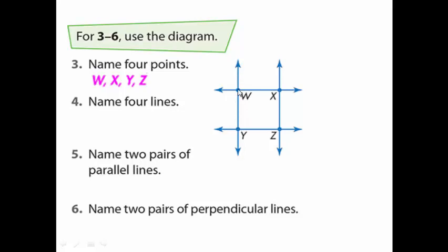The first line is called WY — you can also call it YW, no problem. We have another line WX. We have a third line XZ. We also have YZ. So those are our four lines: WX, WY, XZ, and YZ.